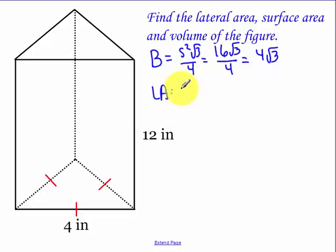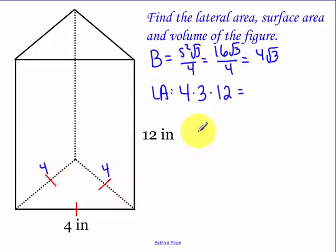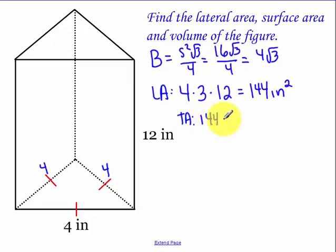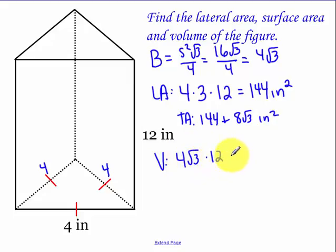For the lateral area: perimeter of the base is 4 times 3 sides, times the height of 12 — or equivalently, the area of each rectangle is 4 times 12 and there are 3 of them — giving us 144 square inches. The total area is the lateral area plus twice the base, plus 8 root 3 square inches. The volume is the area of the base times the height, which works out to 48 root 3 cubic inches.